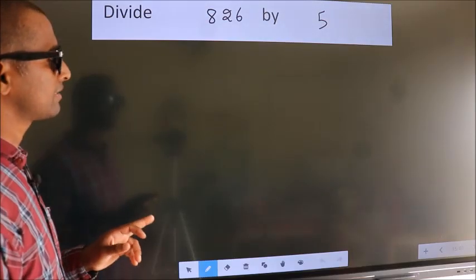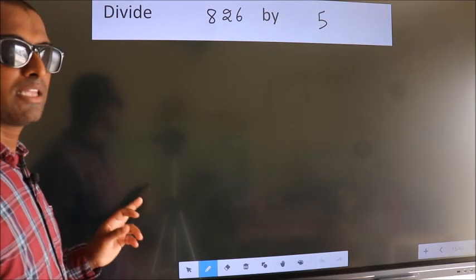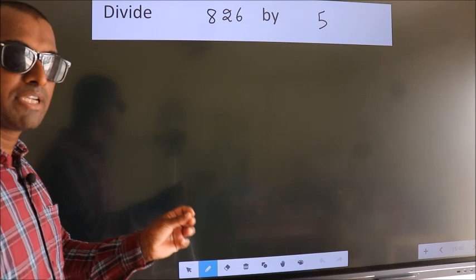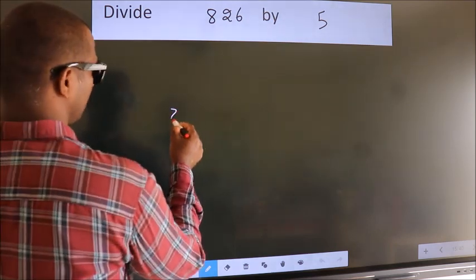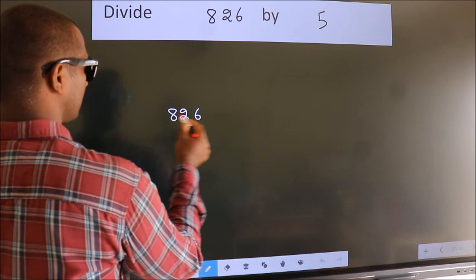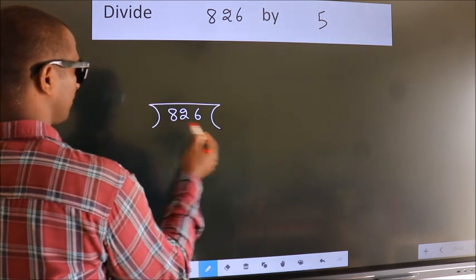Divide 826 by 5. To do this division we should frame it in this way: 826 here, 5 here.